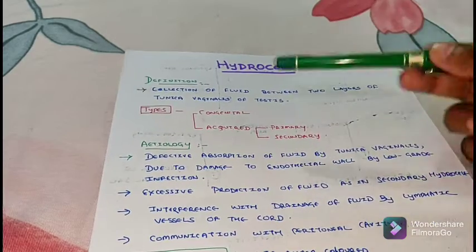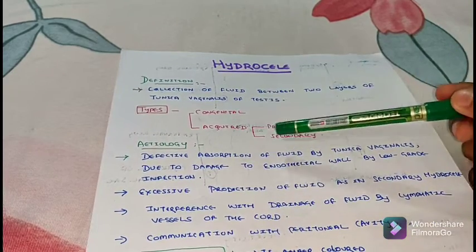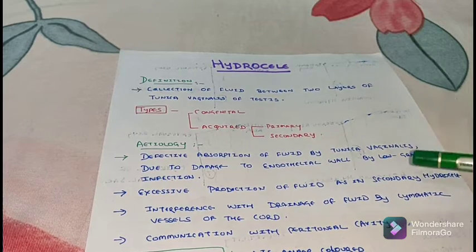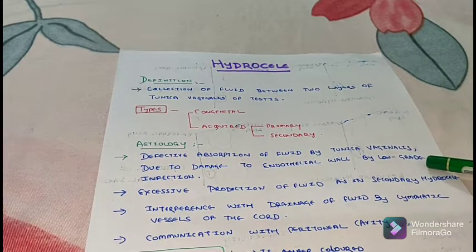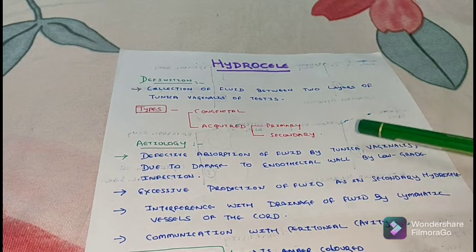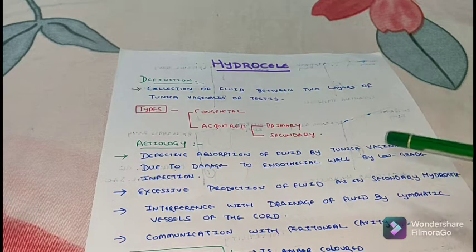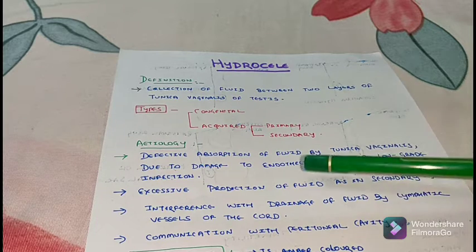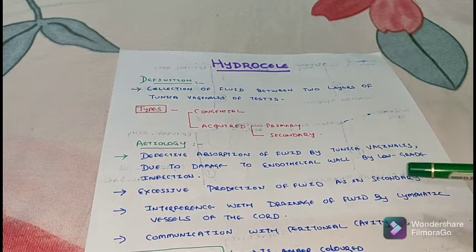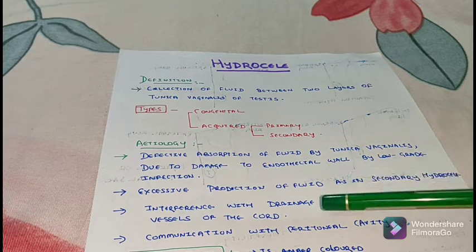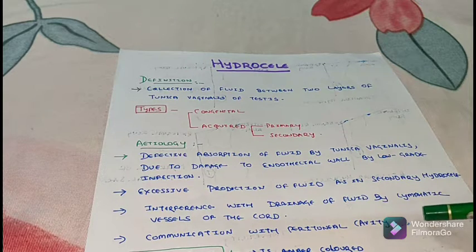The causes of hydrocele include: defective absorption of fluid by the tunica vaginalis due to damage to the endothelial wall by low-grade infection; excessive production of fluid, as in secondary hydrocele; interference with drainage of fluid by lymphatic vessels of the cord; and communication with the peritoneal cavity.